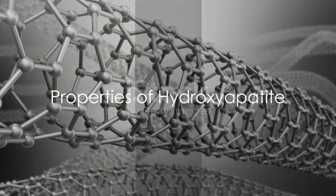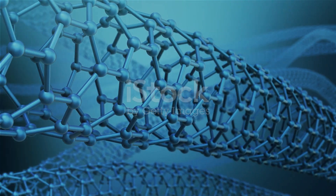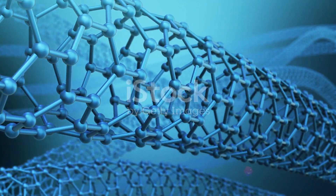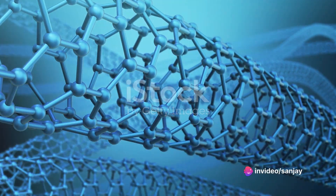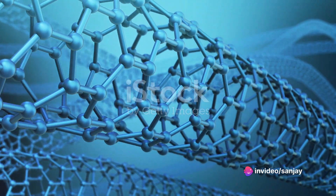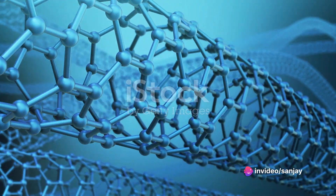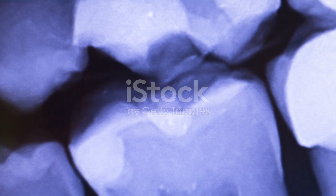Hydroxyapatite is the hydroxyl end member of the complex apatite group. The OH ion can be replaced by fluoride or chloride, producing fluorapatite or chlorapatite. It crystallizes in the hexagonal crystal system.